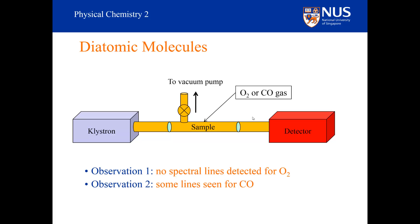But for carbon monoxide, we do see spectral lines. Does this mean that dioxygen molecules do not rotate? No.